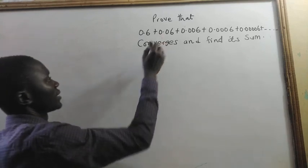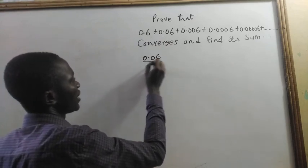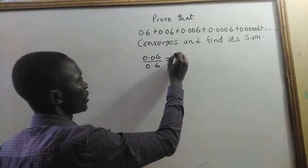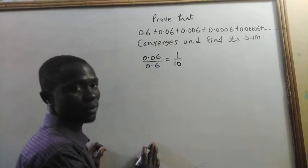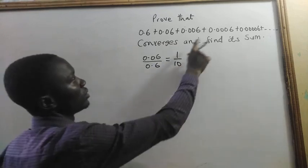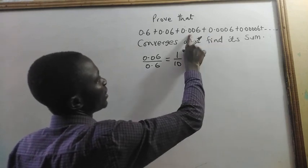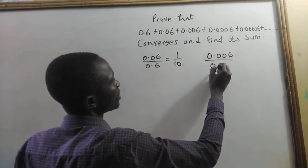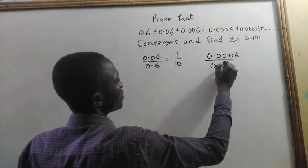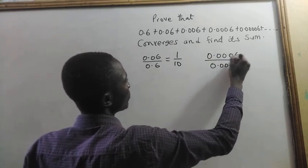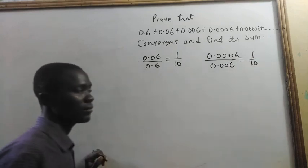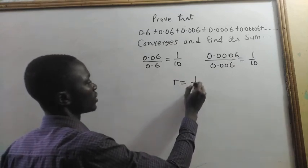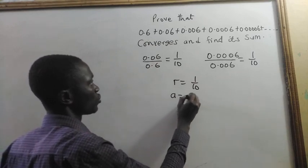Let's take the second term, 0.06, and divide it by the first term. Take that and see on your calculator — this will give us 1 divided by 10. Take the fourth term and divide it by the third term: take 0.006 and divide by 0.006 — you see that this will also give us 1 on 10. So it means that we have common ratio R equal to 1 on 10 and the first term A equal to 0.6.